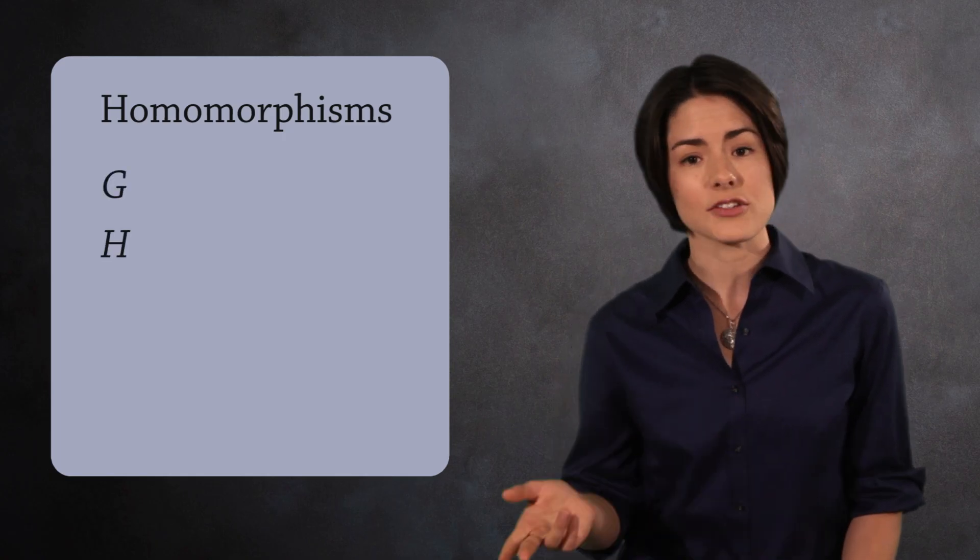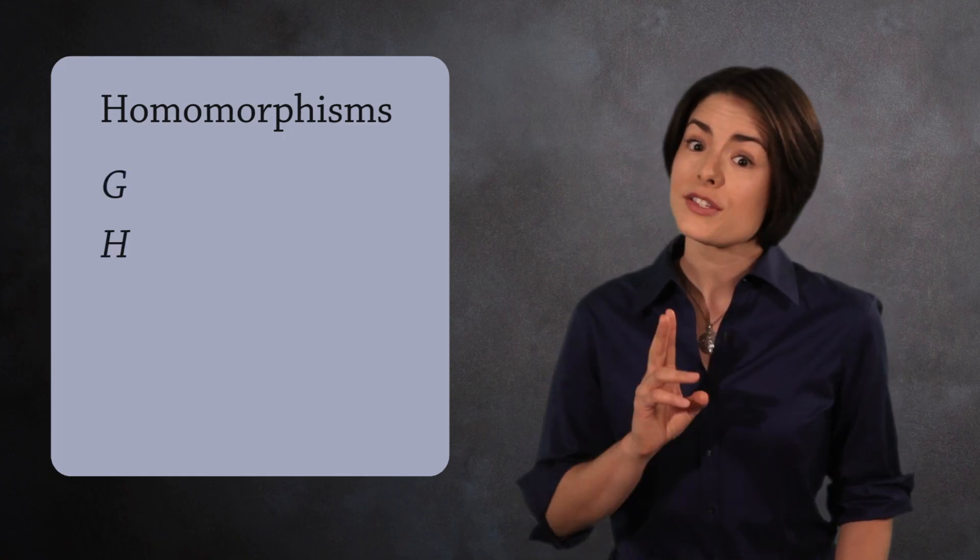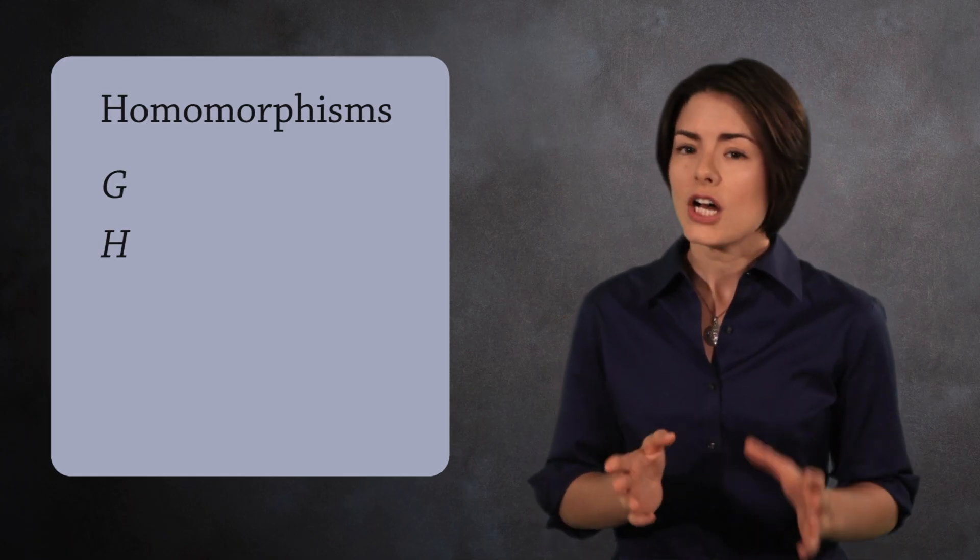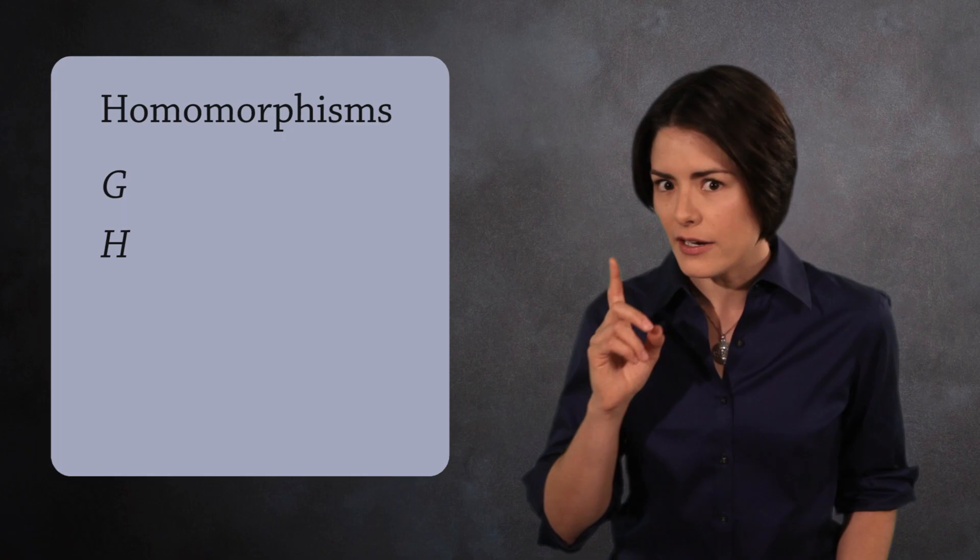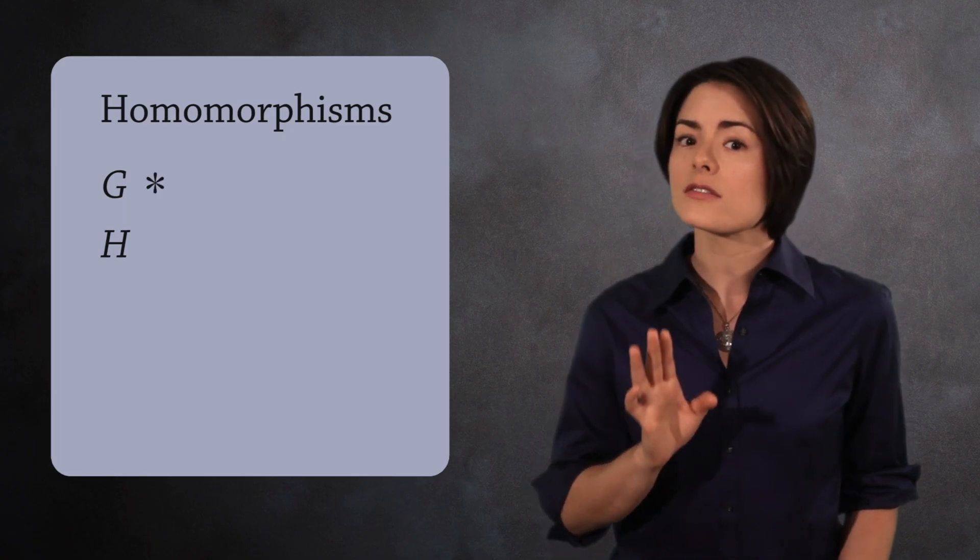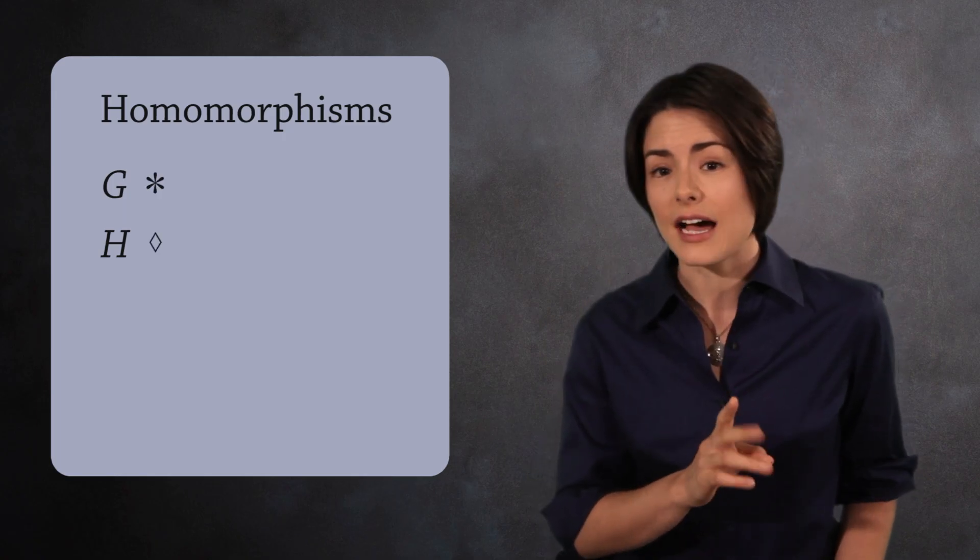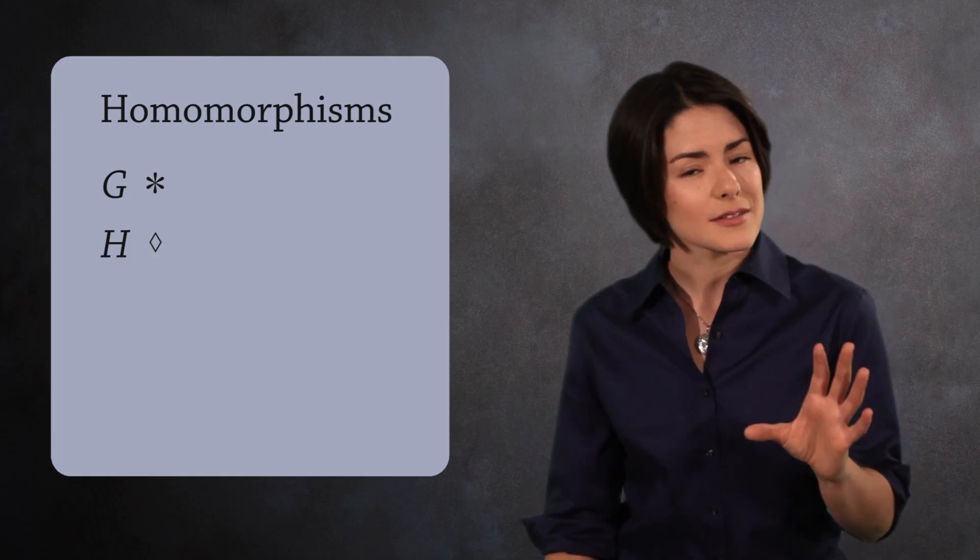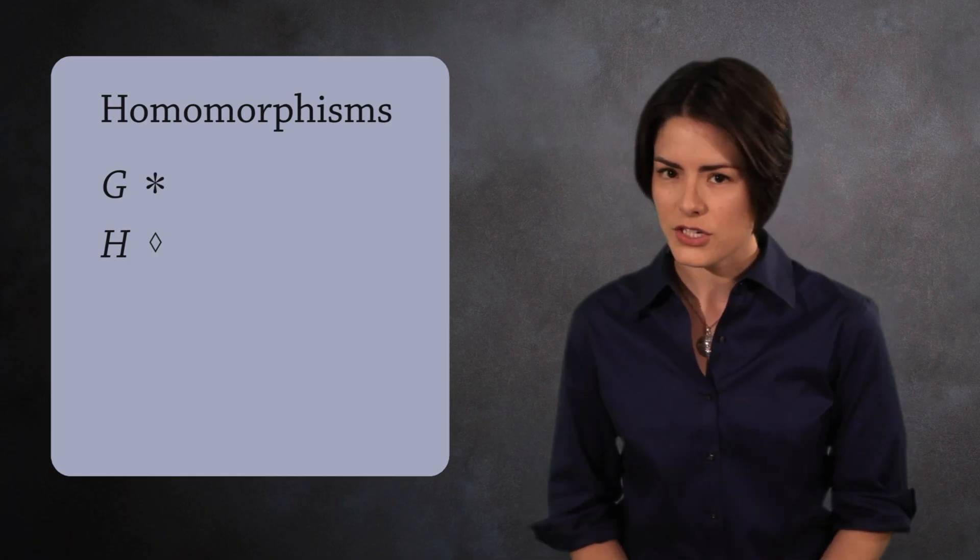Suppose we have two groups G and H. Remember, G and H are different groups, and they may have entirely different group operations. To help us keep G and H separate in our minds, let's use an asterisk for the group operation in G, and a diamond for the group operation in H. We'll still use the word times, but we'll write the correct symbol for the operation.